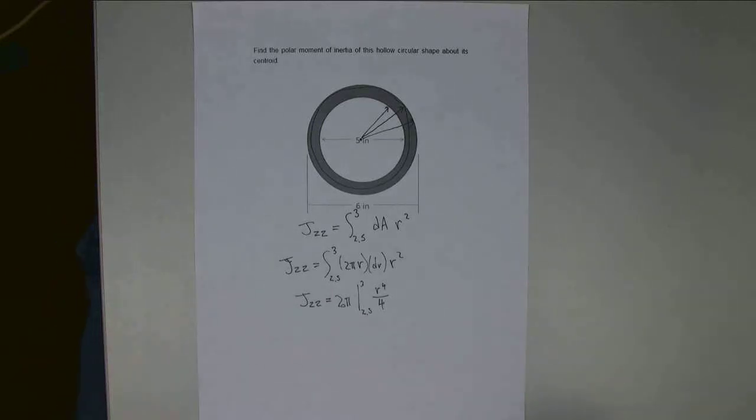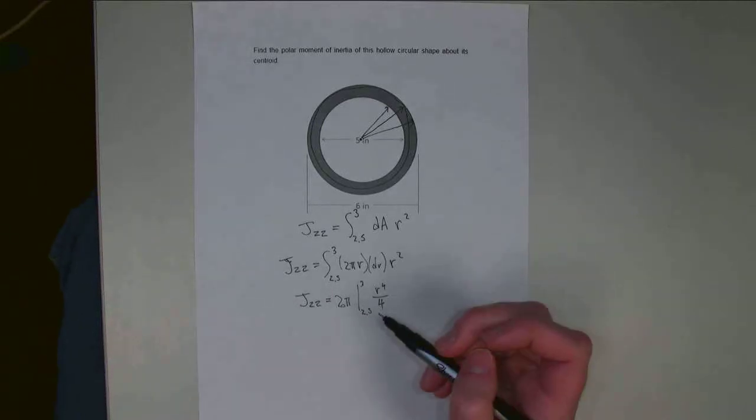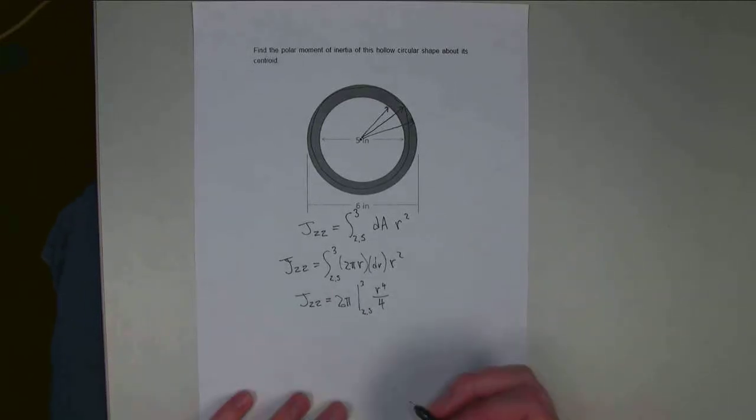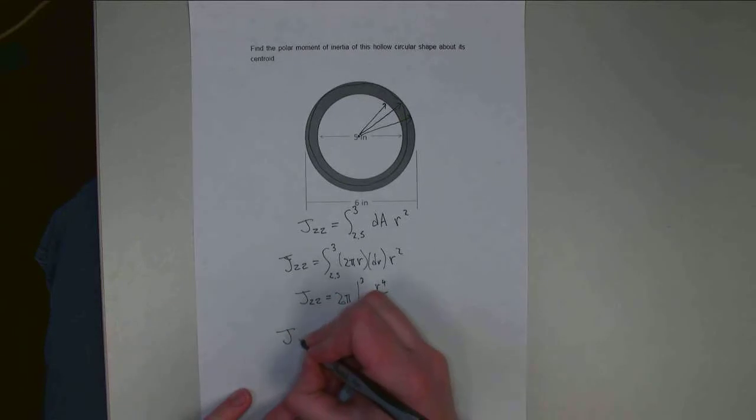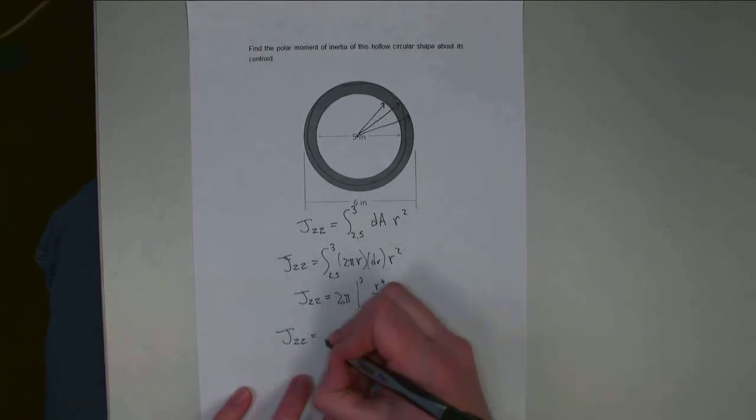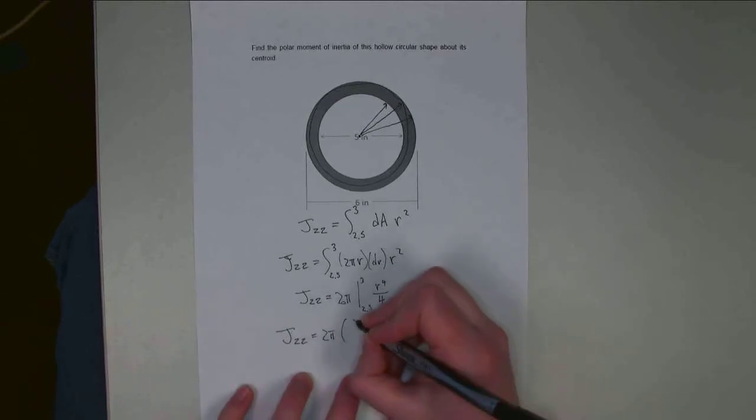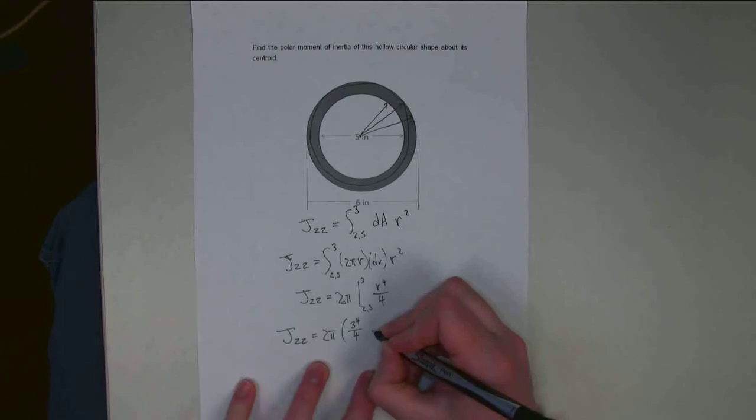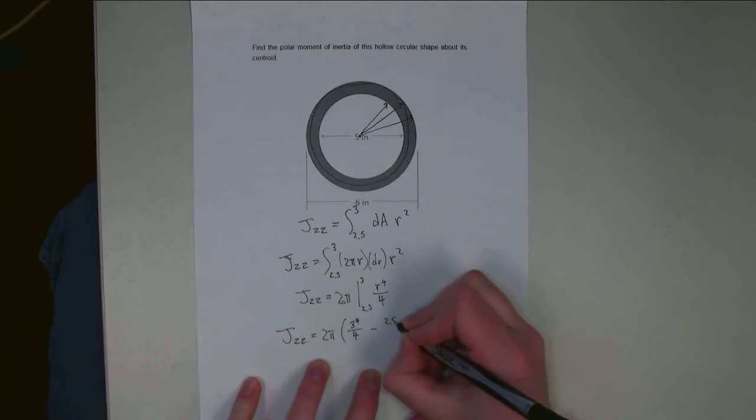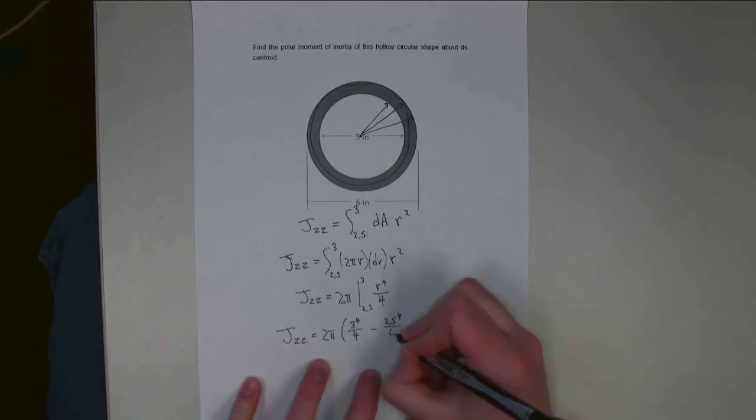So I can evaluate this from 2.5 up to 3. So Jzz is going to be equal to 2π times 3 to the fourth over 4 minus 2.5 to the fourth over 4.